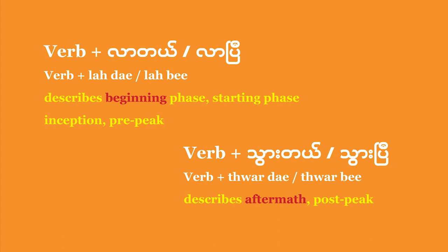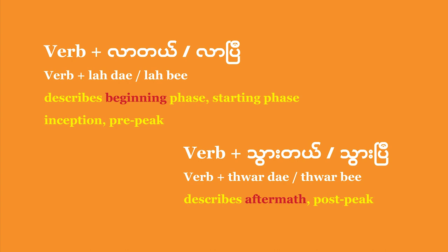Burmese speakers often use the auxiliary verb la in conjunction with the main verb to talk about the developing or beginning phase of an action — the inception phase. Then they also use thwa as the auxiliary verb along with the main verb to talk about the aftermath, the post-event phase.